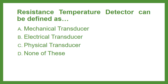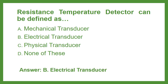Resistance Temperature Detector can be defined as: Option A Mechanical Transducer, Option B Electrical Transducer, Option C Physical Transducer, or Option D None of these. The answer is Option B: Electrical Transducer.